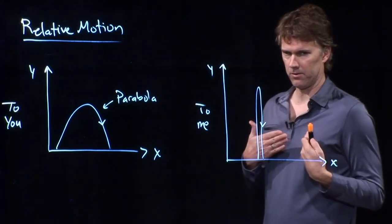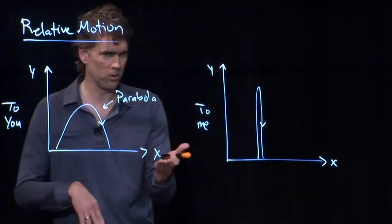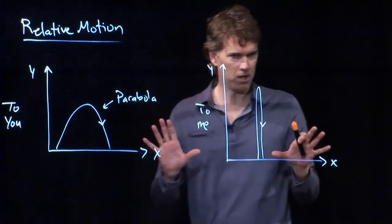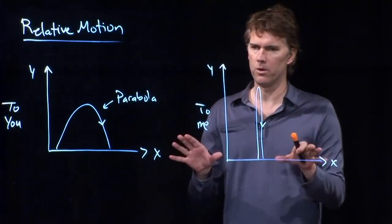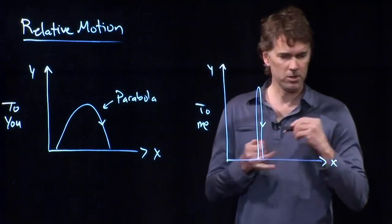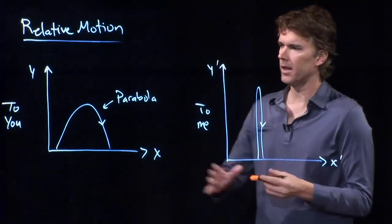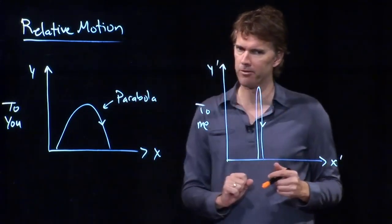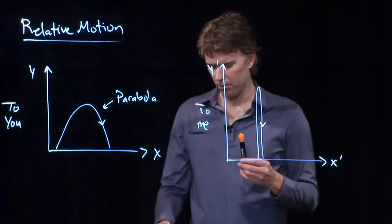My coordinate system was moving with me. Your coordinate system was stationary in the lab frame. And so those are two different coordinate systems. And in fact what we should do is probably call this the X prime Y prime frame to denote that it's different than the XY frame. And so this idea of relative motion is really important.